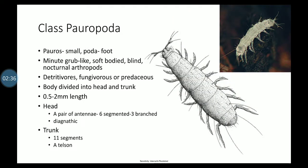The next class is Class Pauropoda. Pauropoda means pauro — small, poda — feet. They are soft-bodied, blind arthropods. They are detritivores, feeding on decaying organic matter, fungi, and some are predaceous.